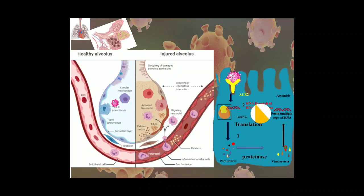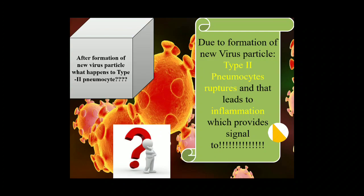Then here they will assemble, right? Then after the assembling, they will produce the baby coronavirus or the new viral particles. These are the new coronavirus that have been replicated, right? Now the question is, after formation of this virus, what next? What occurs to this type 2 pneumocyte? Due to formation of the new virus particles, type 2 pneumocyte ruptures and that leads to inflammation.